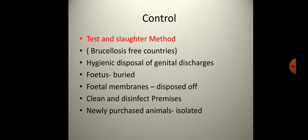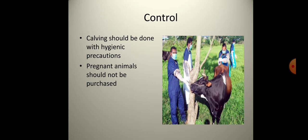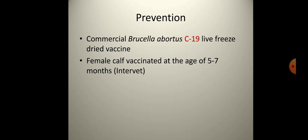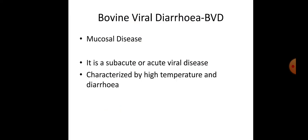Control involves the test-and-slaughter method, hygienic disposal of aborted fetuses and fetal membranes, cleaning and disinfecting premises, and isolating newly purchased animals with hygienic precautions. Pregnant animals should not be purchased. Prevention includes vaccination: Strain 19 Brucella abortus vaccine is given at 2 ml subcutaneously; adult cows after vaccination develop agglutination that persists lifelong. Brucella abortus killed 45/20 vaccine can be used in adult cows. Commercial Brucella abortus S19 live freeze-dried vaccine should be given to female calves at five to seven months of age.